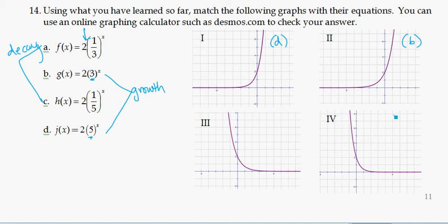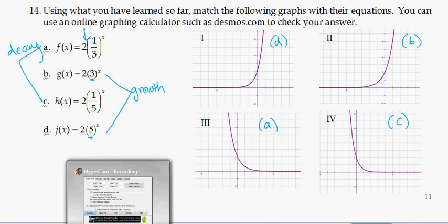So this must be my 1/5 to the x, 2 times 1/5 to the x, and this is my 2 times 1/3 to the x.